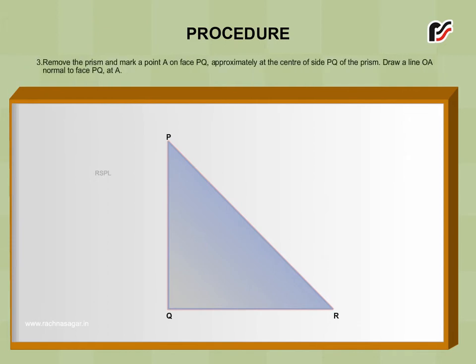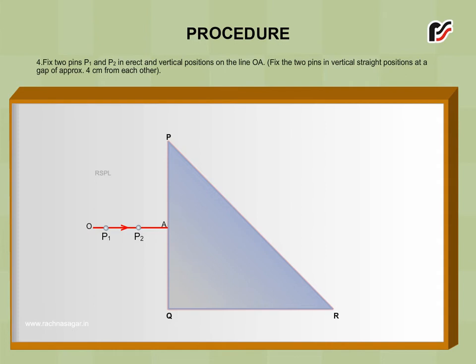Remove the prism and mark a point A on face PQ approximately at the centre of side PQ of the prism. Draw a line OA normal to face PQ at A. Fix two pins P1 and P2 in erect and vertical positions on the line OA.